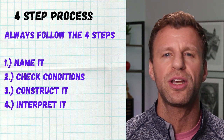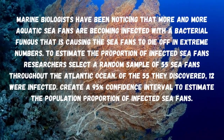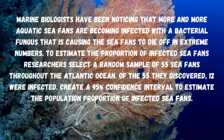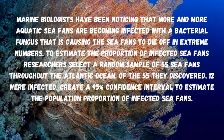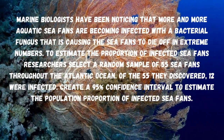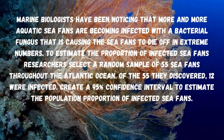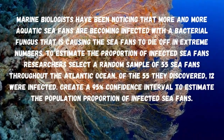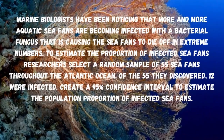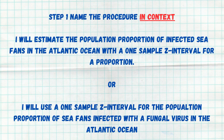Now let's take a look at a quick example. Marine biologists have been noticing that more and more aquatic sea fans are becoming infected with a fungus causing them to die off in extreme numbers. To estimate the proportion of infected sea fans, researchers select a random sample of 55 sea fans throughout the Atlantic Ocean, and of those 55, 12 were infected. We'll use this data to create a 95% confidence interval. Step one: I'm going to find a one sample Z interval for the population proportion of infected sea fans in the Atlantic Ocean that have this fungal disease.